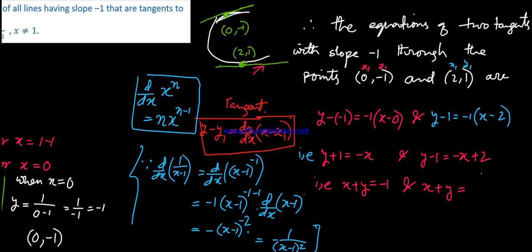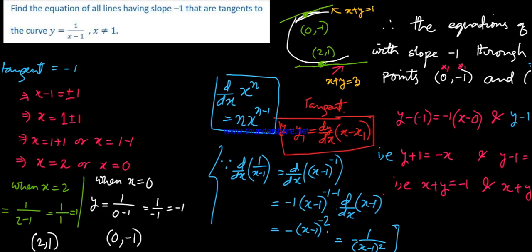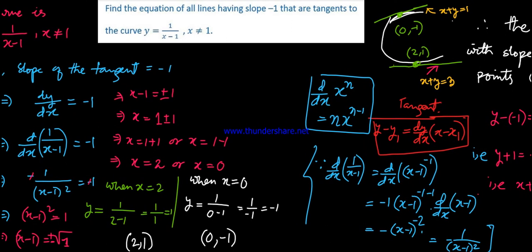For the point (2, 1): y minus 1 equals minus 1 times (x minus 2), so y minus 1 equals minus x plus 2, which gives x plus y equals 3.